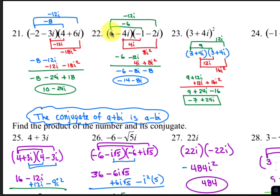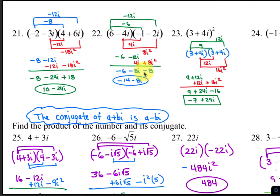For number 22, distribute again. 6 times negative 1 is negative 6. 6 times negative 2i is negative 12i. Negative 4i times negative 1 is positive 4i. And negative 4i times negative 2i is positive 8i squared. Combining the like terms, negative 12i plus 4i makes negative 8i, and 8i squared becomes negative 8. Negative 6 plus negative 8 is negative 14, so your answer is negative 14 minus 8i.